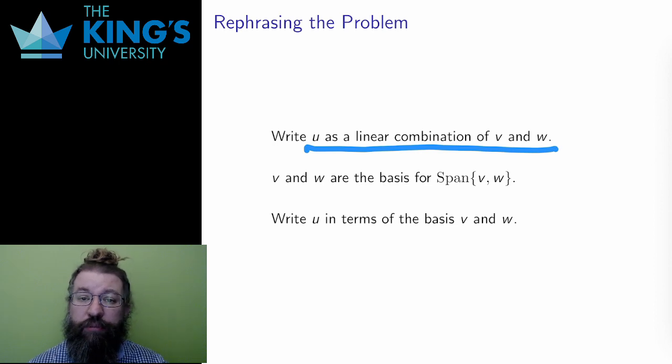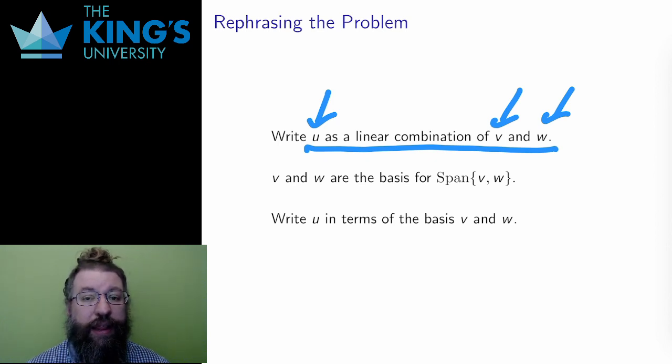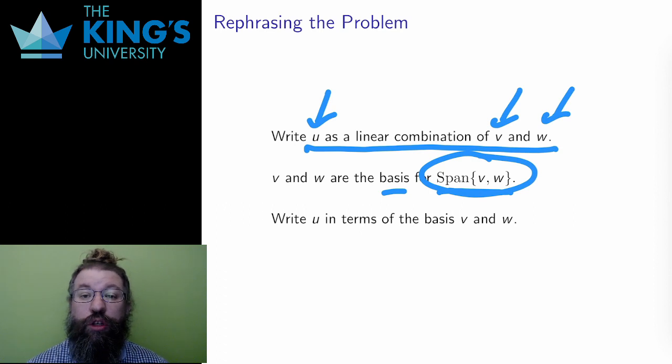I want to write some vector u as a linear combination of some other vectors v and w if possible. Let me rephrase what is going on. If v and w are linearly independent, they form a basis for the span of v and w. U can be written as a linear combination only if it is in that span. If it is, I am writing u in terms of the basis of that span v and w.